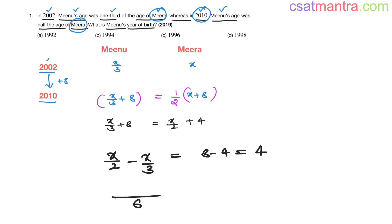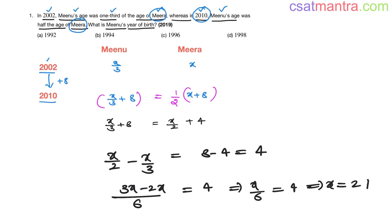The LCM is 6. So 3X minus 2X over 6 equals 4, giving X by 6 equal to 4, therefore X equals 24. In 2002, Meera is 24 years old. Mino's age is X by 3, which is 24 by 3 — that is 8 years old.